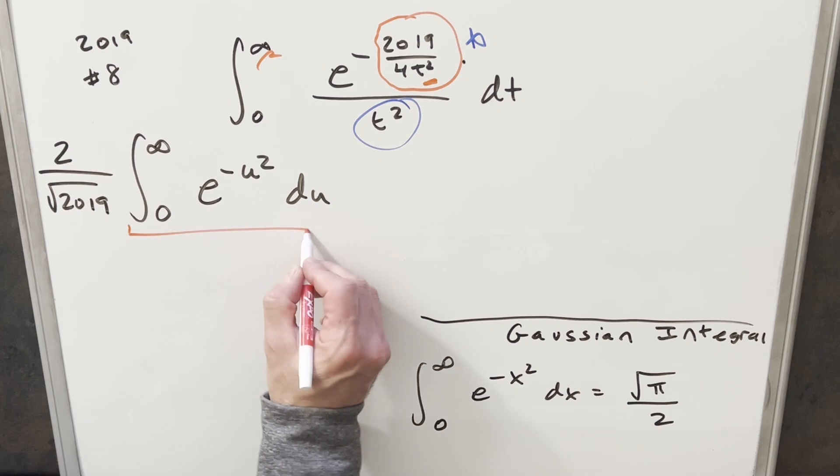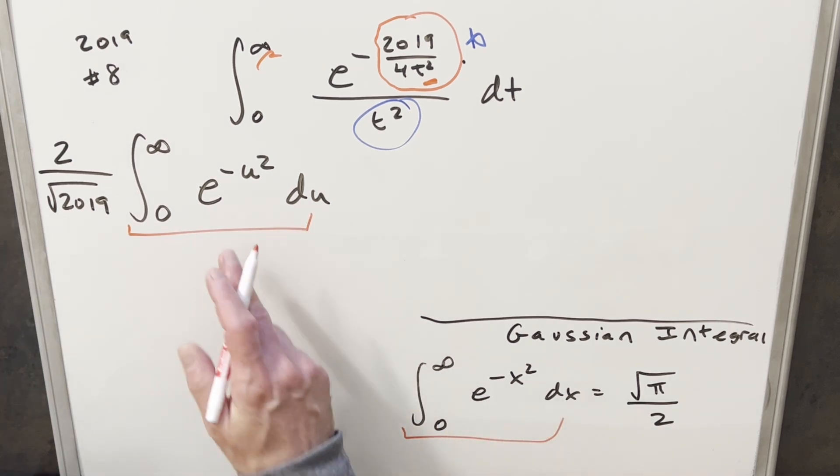But now that we have everything cleaned up, we just noticed this integral we have right here. This is exactly the same as what we have down here. Different variable, but that's not going to matter for a definite integral. So we can go right to our formula and use this value here.